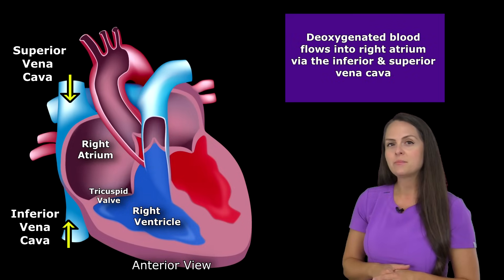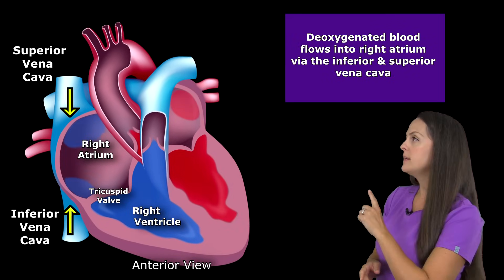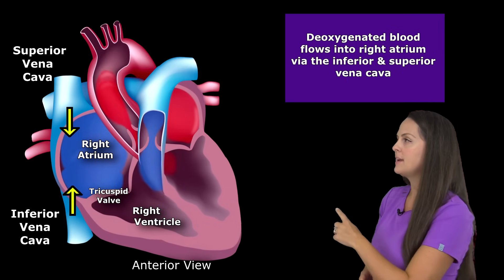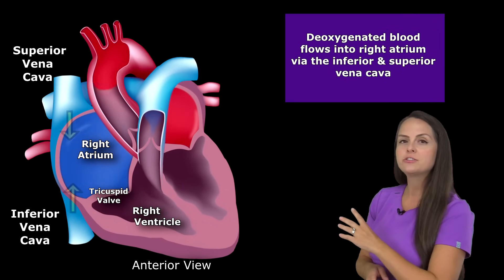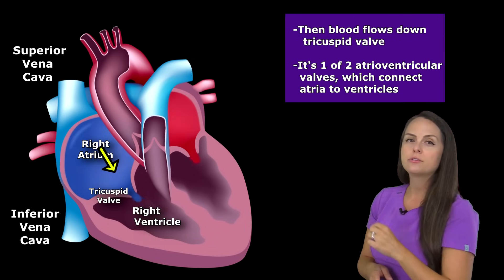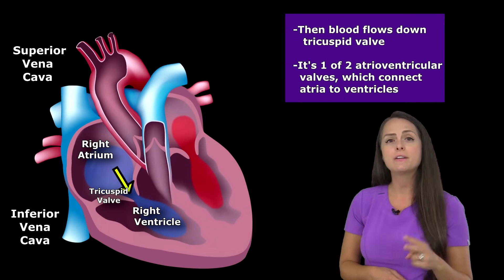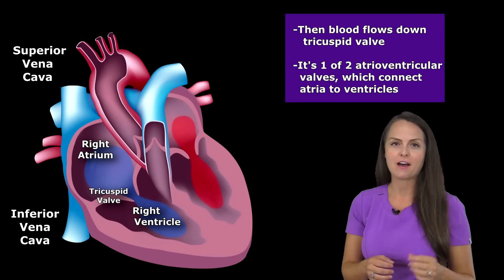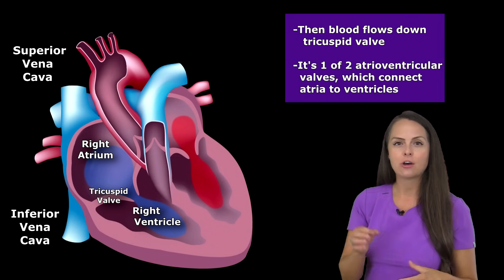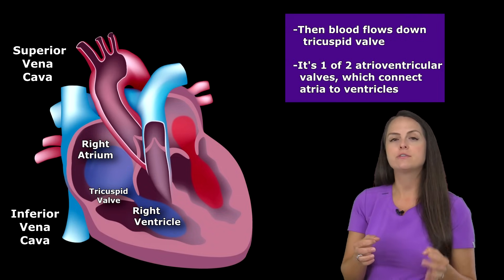The deoxygenated blood is going to flow into the right side through the superior vena cava and the inferior vena cava. It's going to go into the right atrium, which is the top chamber of the heart. Then it's going to flow down through the tricuspid valve. The tricuspid valve is one of two atrioventricular valves, which connect your top chambers, your atria, to your bottom chambers, your ventricles.